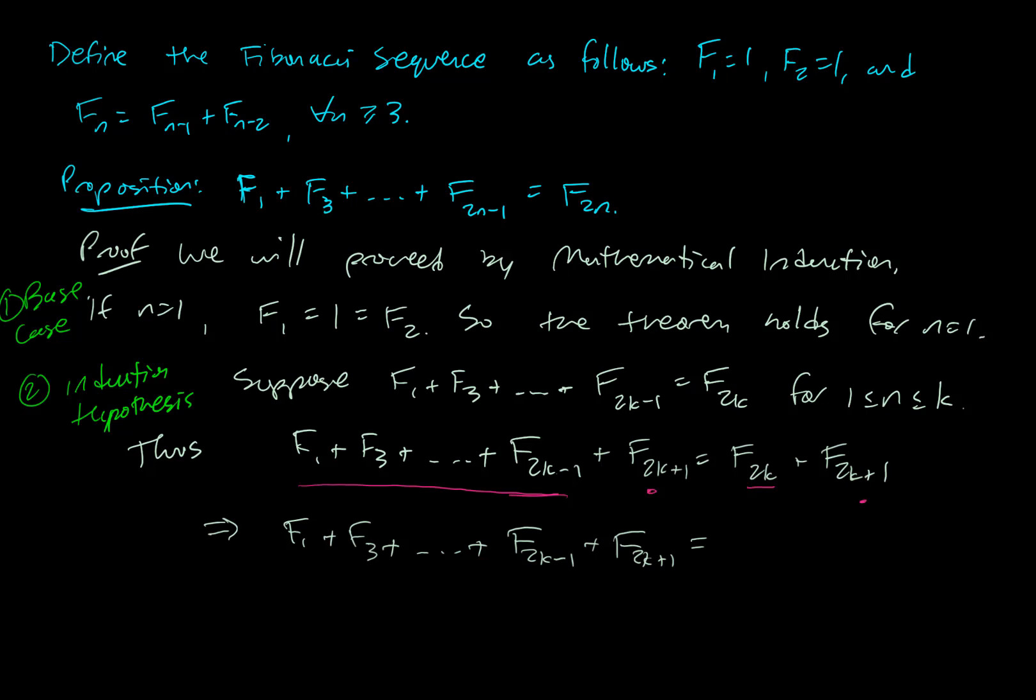Well, don't forget, what are the Fibonacci numbers? They follow this rule. The previous two add up to the next one. So F(2k) + F(2k+1), those are two in a row. When they add up, you get the next one in the sequence.